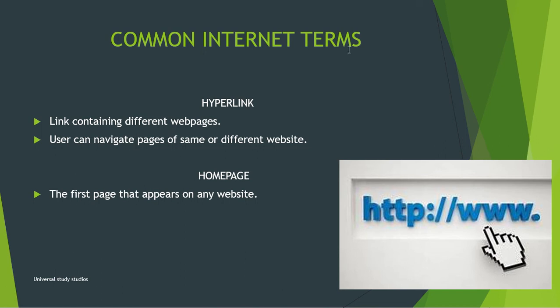Let's learn about common internet terms. A hyperlink is a link containing different web pages; a user can navigate pages of the same or different website. Just like pages in a book, the user can open and navigate different pages — either within one website or another website.